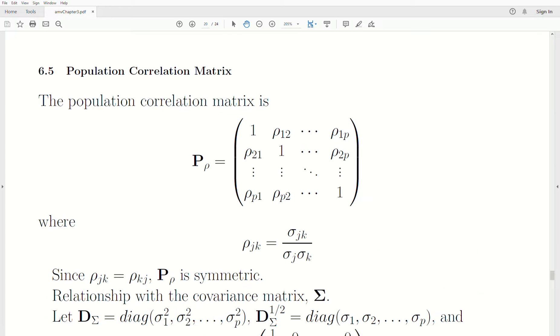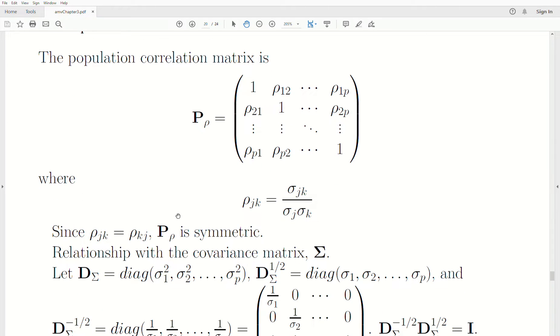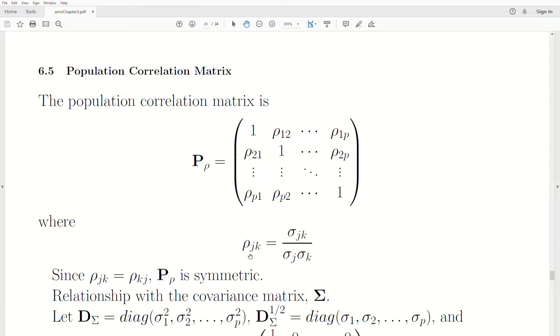Let's jump right into our topic for today, which is the population correlation matrix in the multivariate setting. The population correlation matrix is denoted by capital P and consists of all the correlations between the variables. Notice the ones down the diagonal, which is a correlation of variable 1 with variable 1. Well, that's a perfect correlation. Each correlation is defined as the covariance divided by the product of the standard deviations. That is the definition.